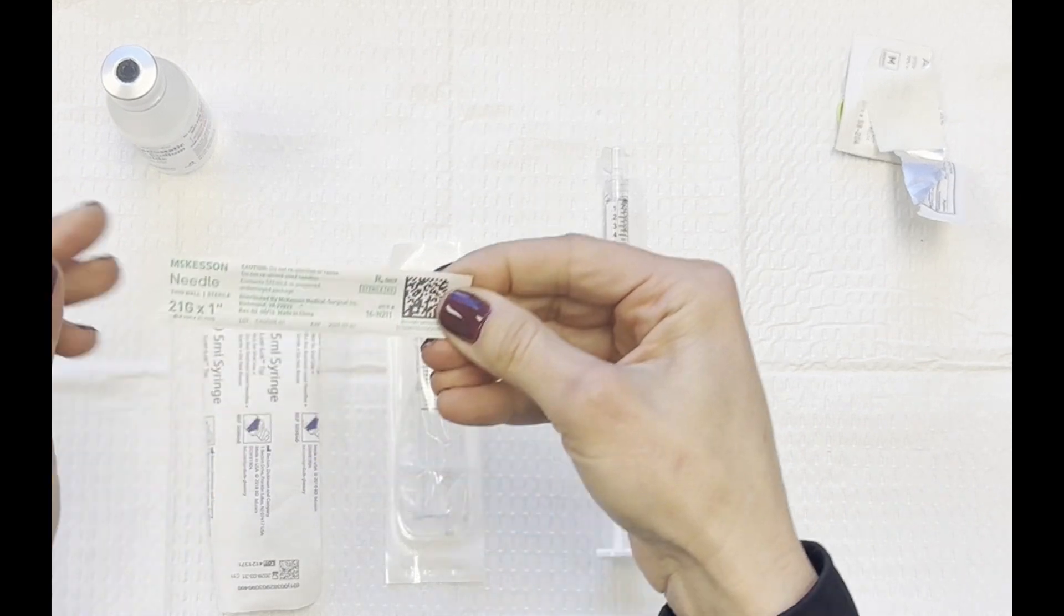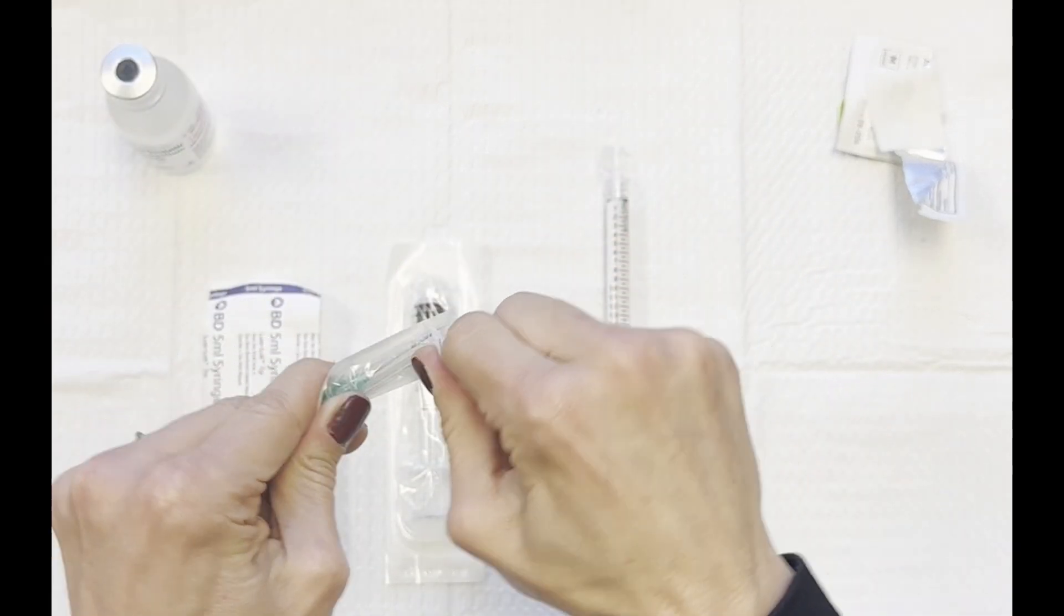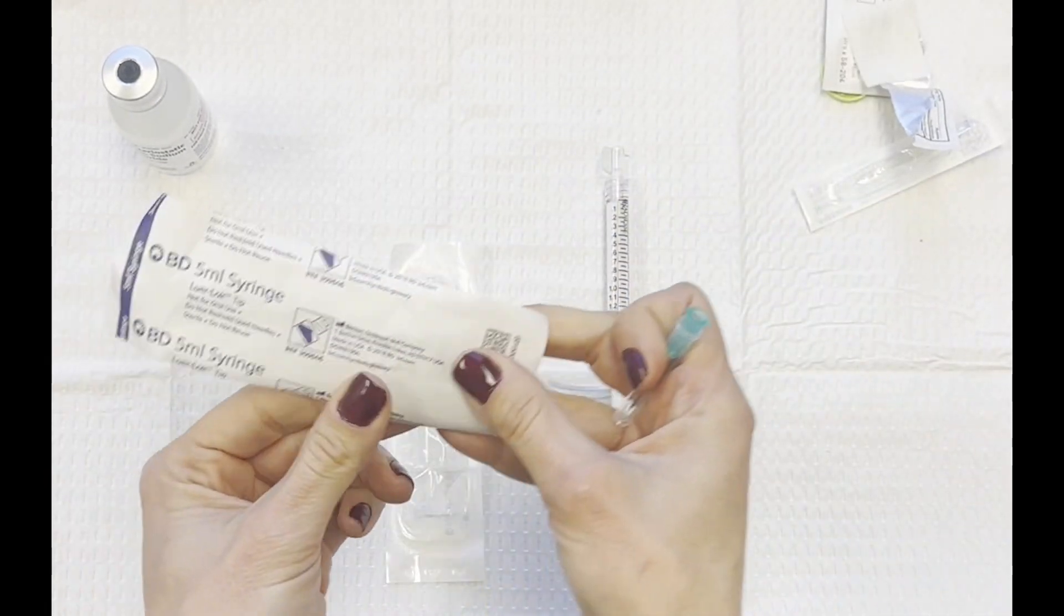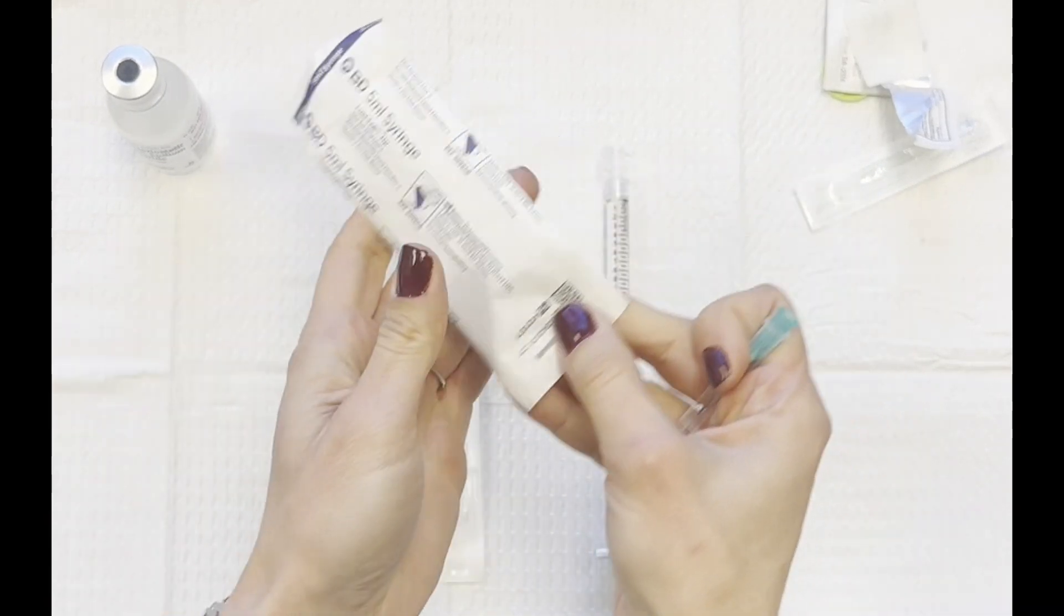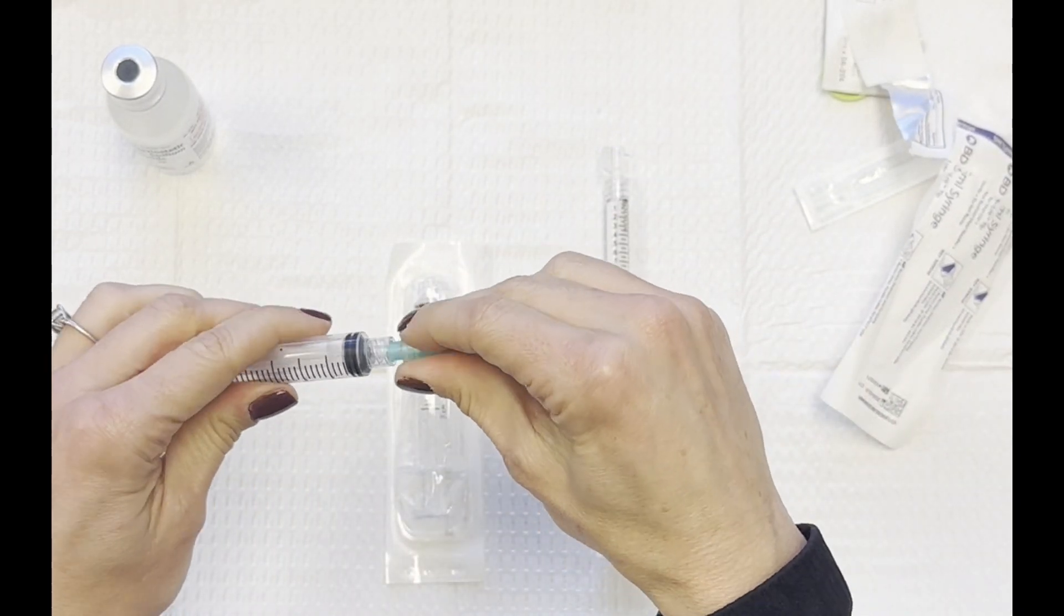So if I want to do a 1 to 2 ratio, meaning one part Radiesse, two parts normal saline to dilute it down, I'm going to draw up 1.5 times 2, which is 3cc's of bacteriostatic normal saline.